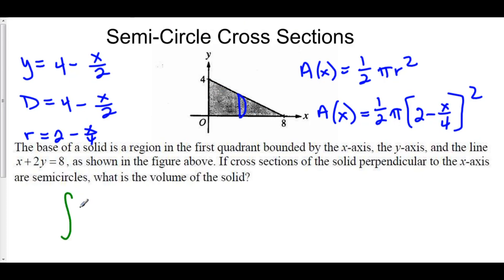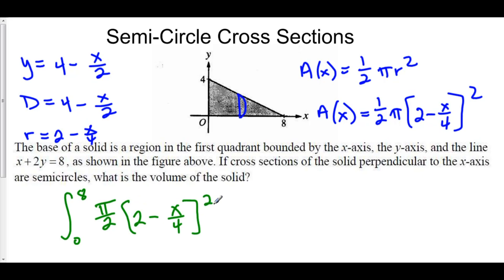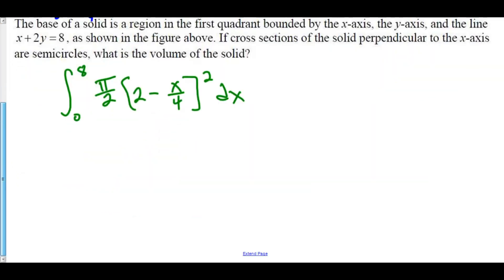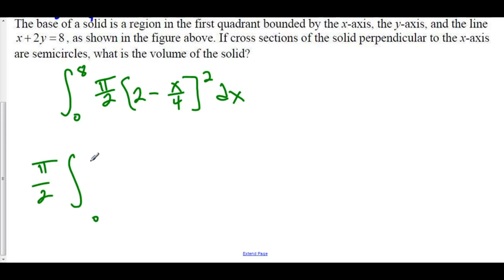At this point we can create the integral that represents the volume of this solid. Our integral is along the x-axis from 0 up to 8. The area of each cross-section is pi over 2 times the quantity 2 minus x over 4, squared, dx. We can perform this integral by first pulling out the pi over 2, giving us pi over 2 times the integral from 0 to 8 of 2 minus x over 4 squared dx.